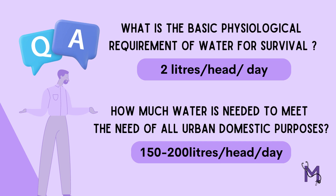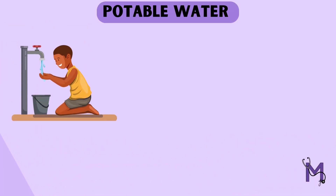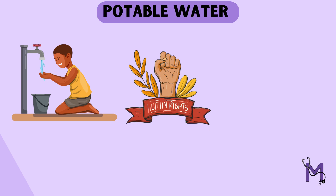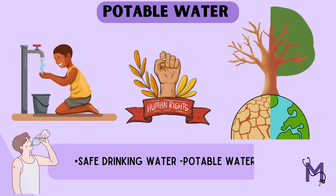Based on these questions, as you would have already understood, today we are going to talk about potable water and its sources. Water is essential for life and access to safe drinking water is a basic human right. There can be no state of positive community health and well-being without a safe water supply. This safe drinking water is known as potable water.